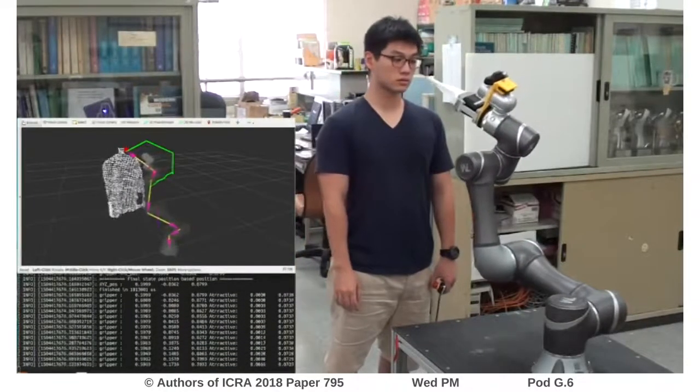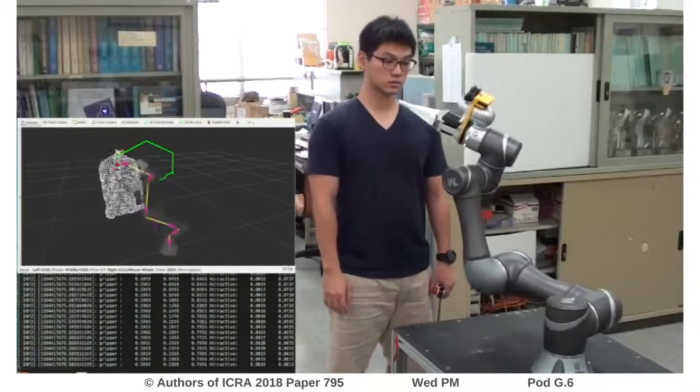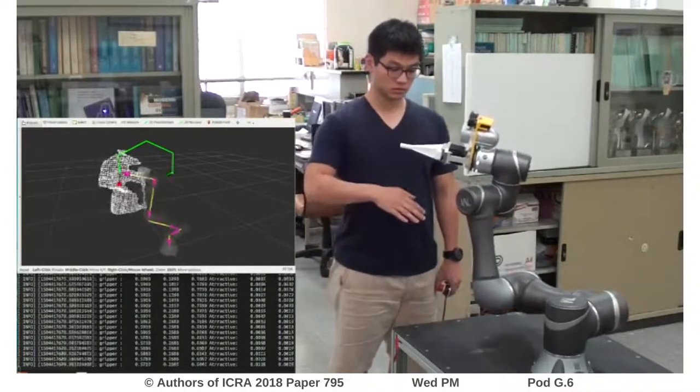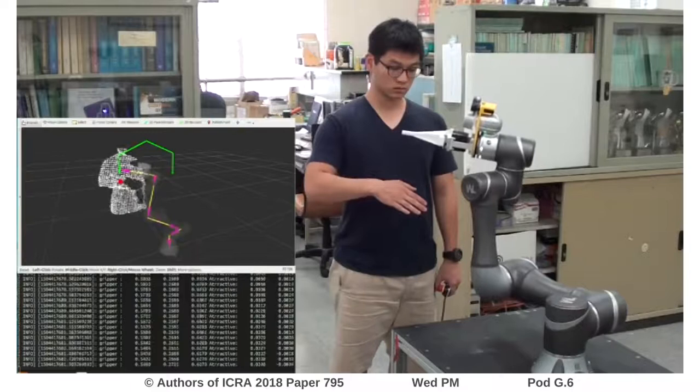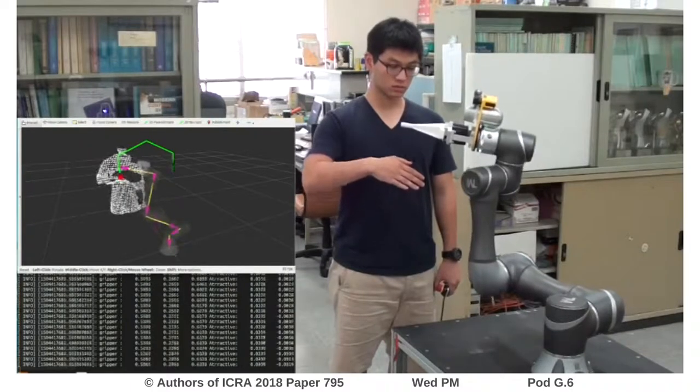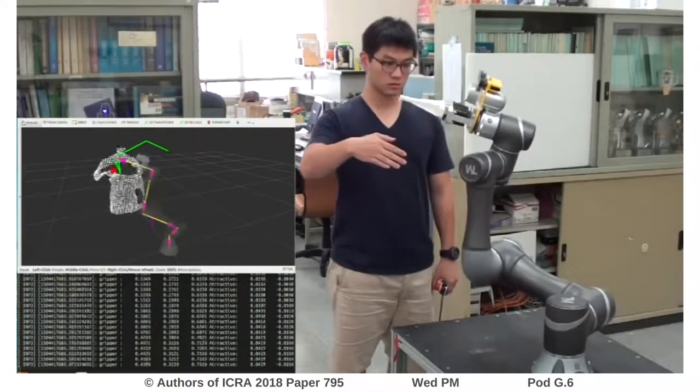We can see the end effector trajectory was modified by repulsive force to avoid collisions from the object or human hand. The trajectory was visualized on the left side as a green line.